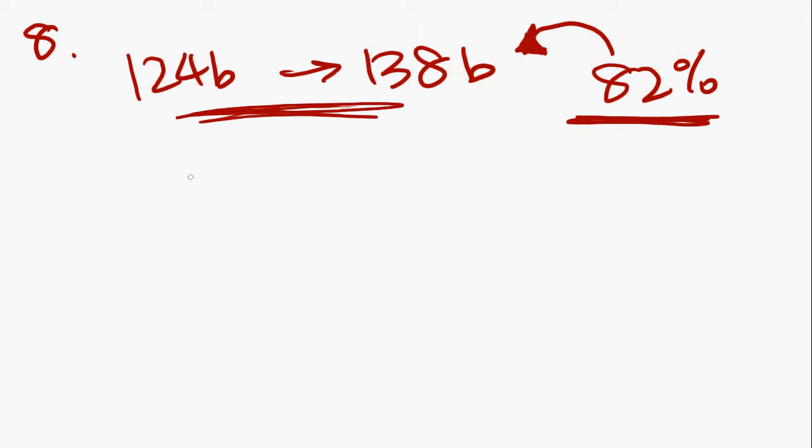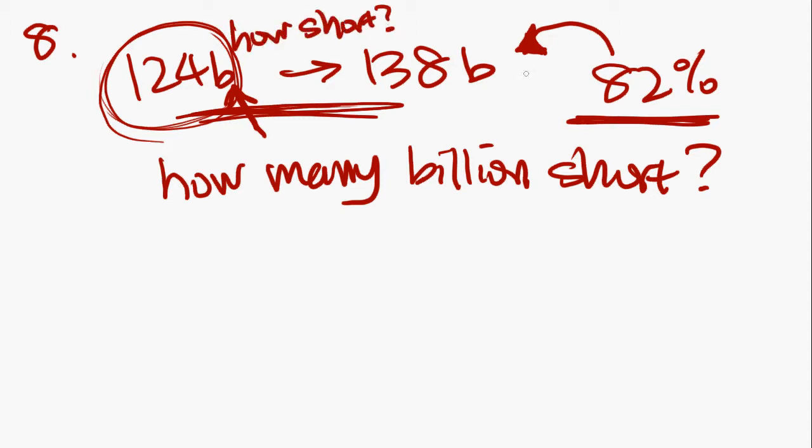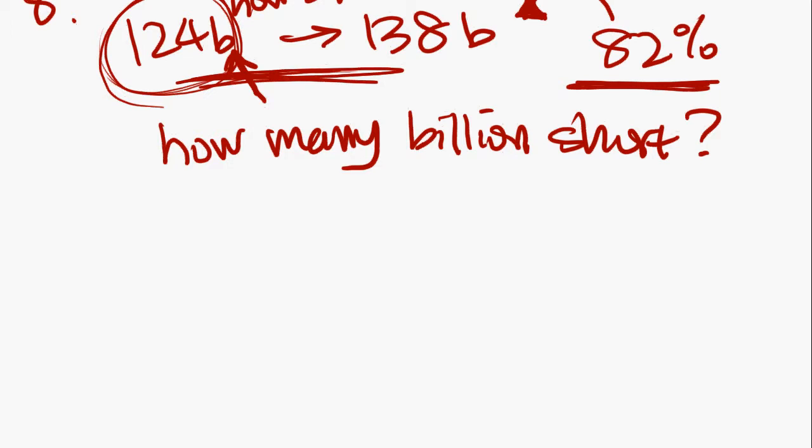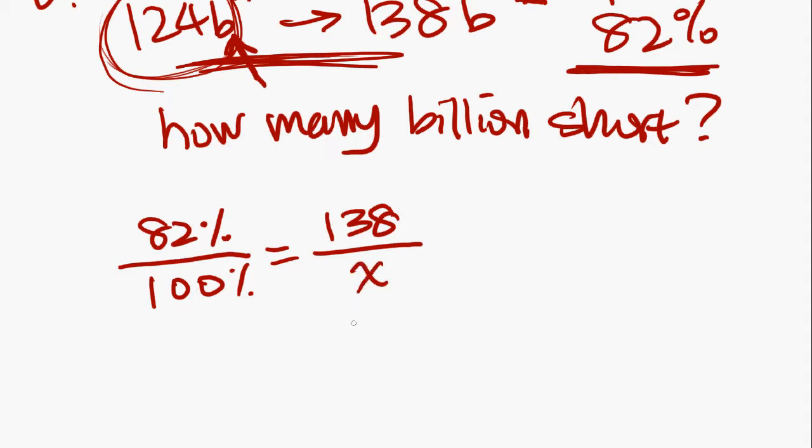Because what they're asking for is how many billion short before the storm. This here is before the storm. They're asking how much, how short. Alright, let's start. The first thing we want to do is figure out what the total capacity is. We know that 82% is 82 over 100, right? So whatever maximum capacity is, it's going to be 100%. So 82 over 100 is the same as 138 billion over however many billion is the total capacity. We'll use x because we'll actually want to solve for it. So what we want to do is cross-multiply.